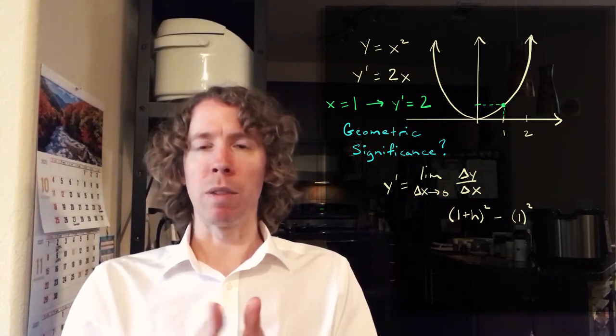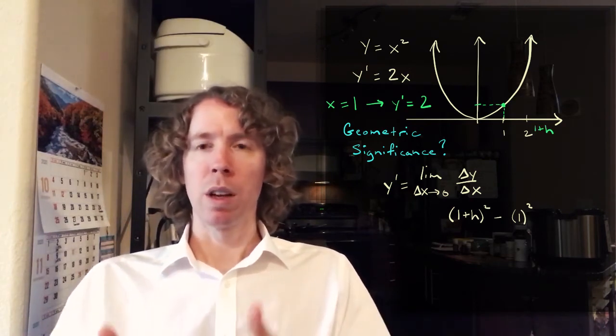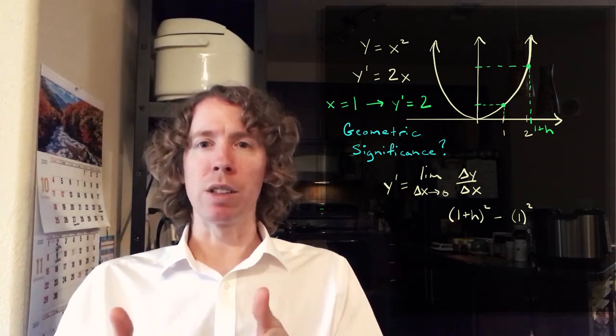So if you start at X equals one and you let that X value go out a little bit, let's say we use an increment of H. So it goes from one to one plus H, then the difference in those X values is H. That's what we're dividing by.